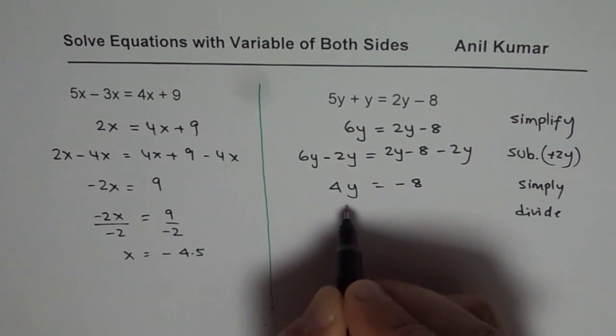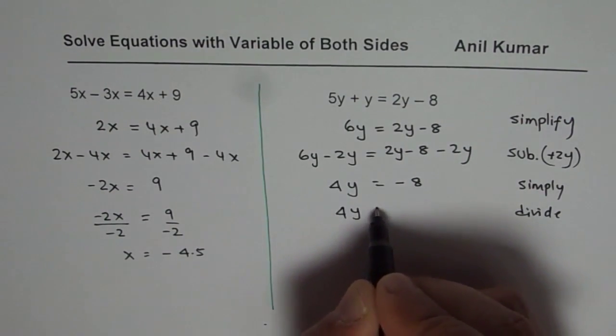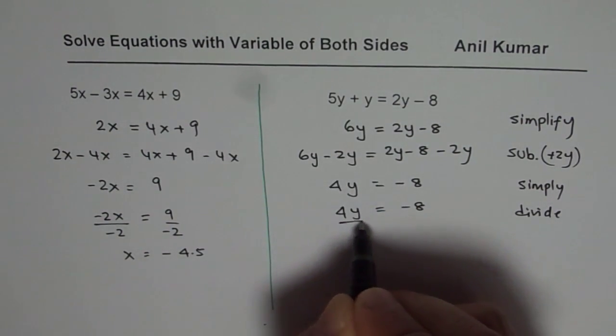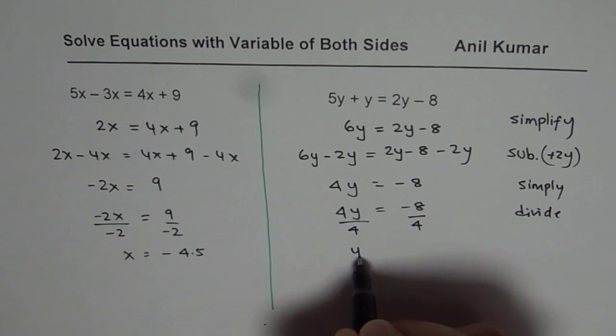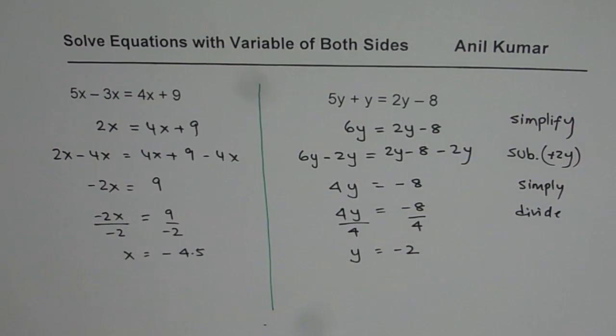So we are left with minus 8. Now we have to divide by 4 to get the answer, right? So we will divide by 4 on both the sides to get y equals minus 2. So y equals minus 2 is the answer for the second question.